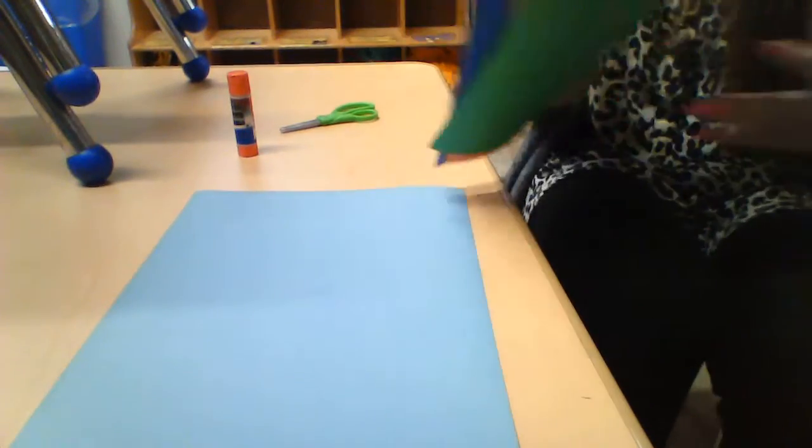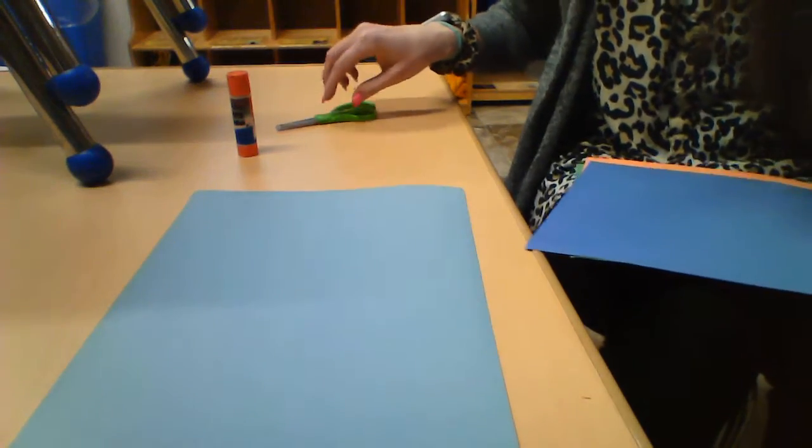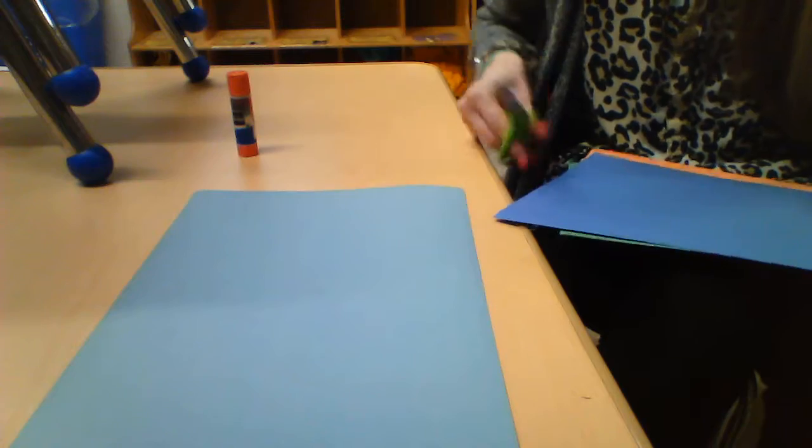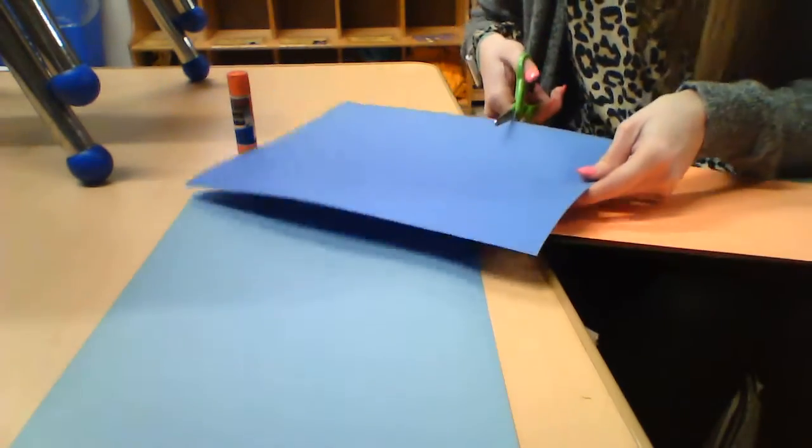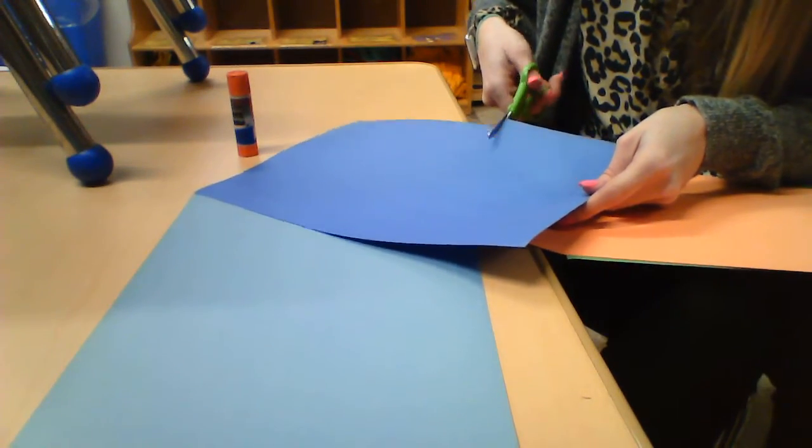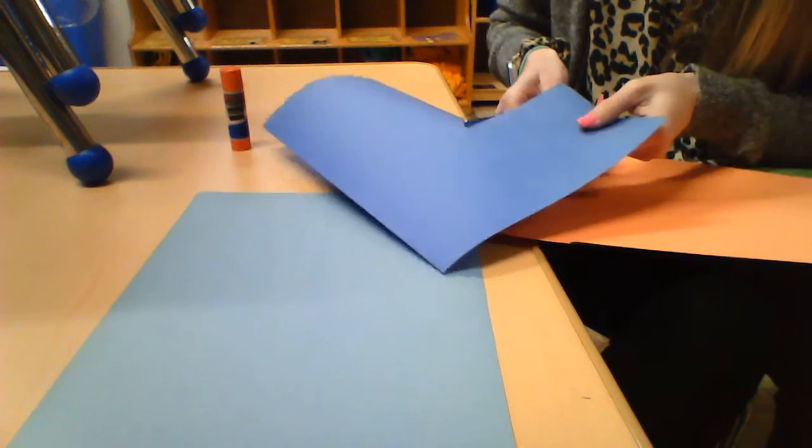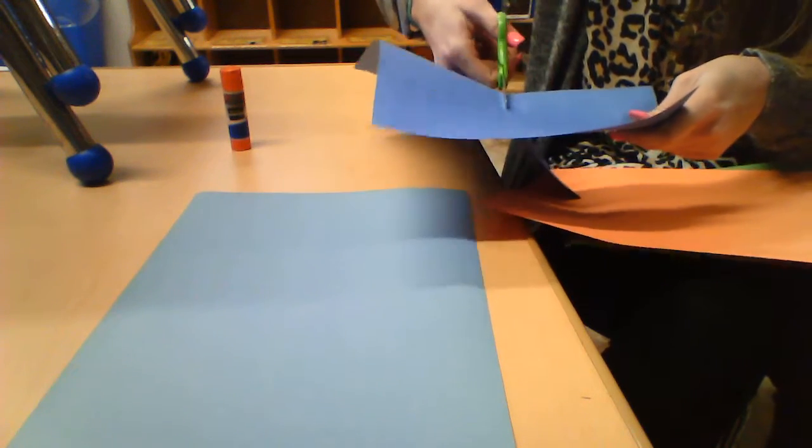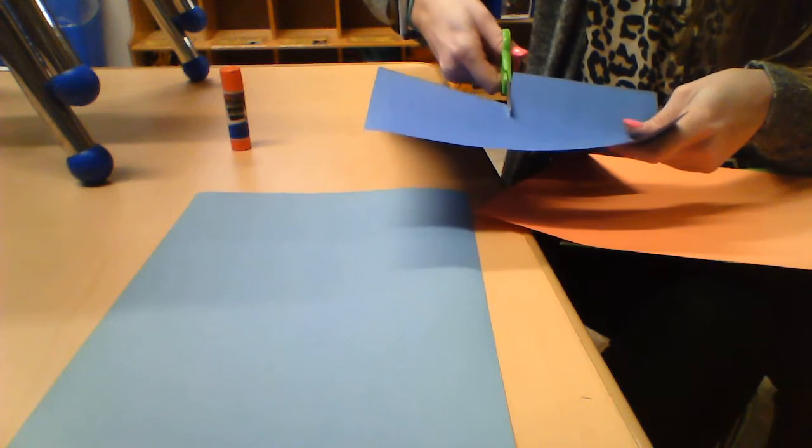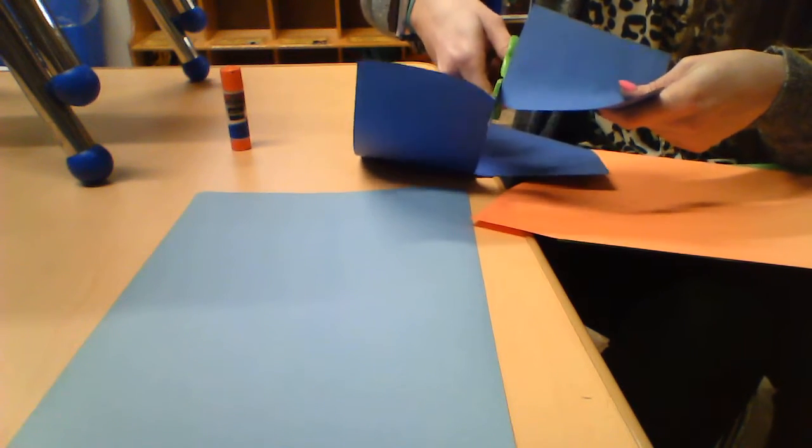The first thing I'm going to do is use this light blue paper as my background. Miss Smith is going to cut out a square to be the house part. You guys can draw this if you would like and then cut it out—it's up to you.